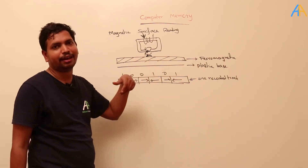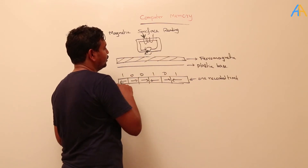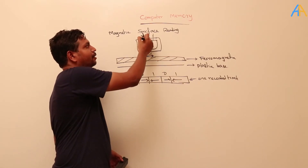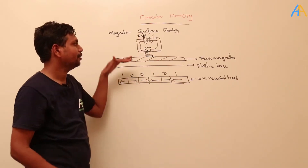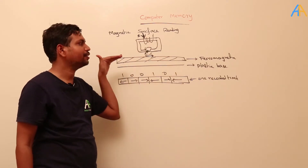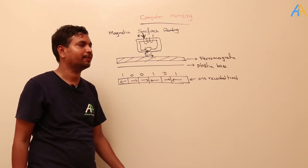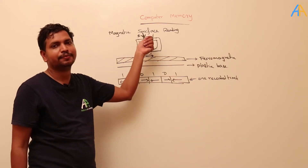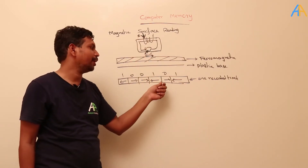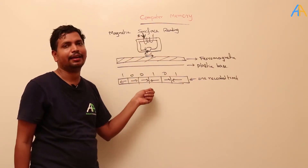If they want to write in the opposite direction, they simply change the direction of the current in the coil. This causes the magnetic field to be created in a different direction, and the ferromagnetic layer below aligns accordingly. This is how writing of zeros and ones is done — simply changing the current direction changes the magnetic pole alignment.